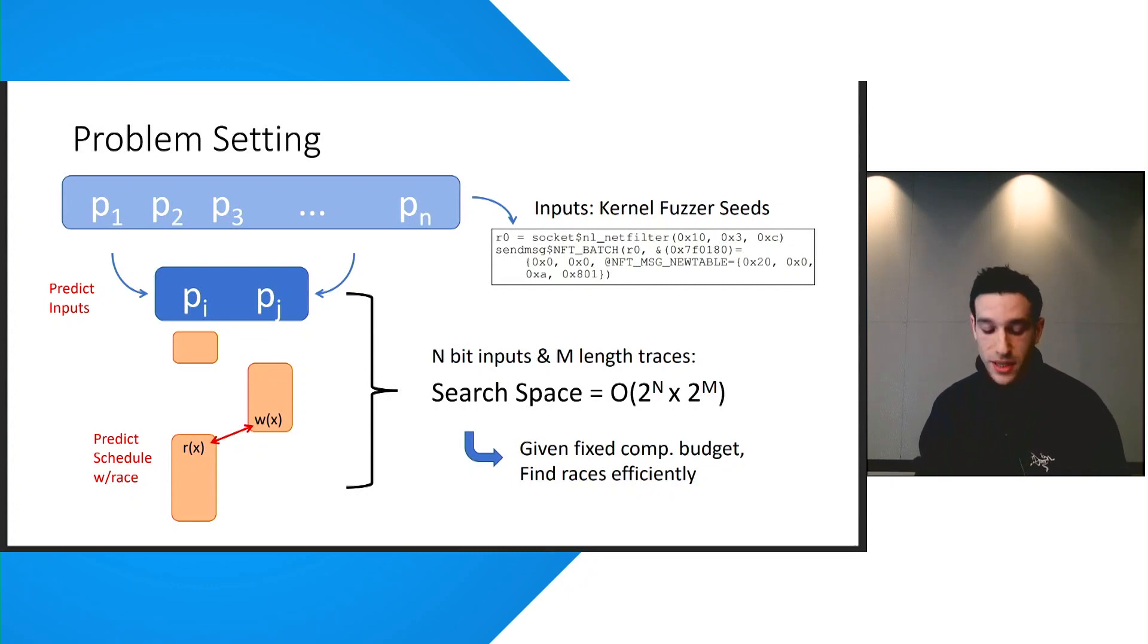So we start with a corpus of possible system call inputs. And in practice, these inputs are usually kernel fuzzer seeds that are generated from syscaller or another kernel fuzzer. To identify a race, we first need to select a subset of these inputs and then identify a feasible concurrent execution schedule where a race occurs. So this is a very challenging problem where we have an exponential search space over both the input combinations and thread execution schedules. And therefore, in practice, it's impossible to find all races for the kernel. So instead, the focus for testing is on finding as many races as possible given a fixed computational budget.